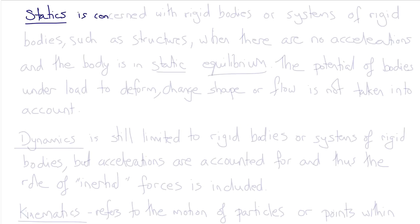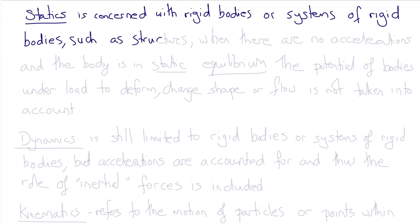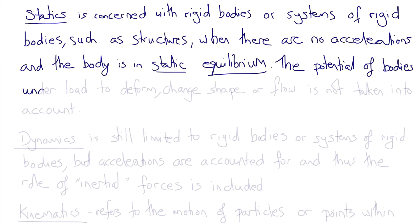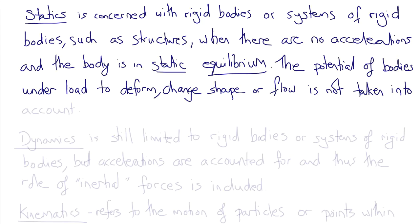Statics is concerned with rigid bodies or systems of rigid bodies, such as structures, where there are no accelerations and the body is therefore said to be in static equilibrium. The potential of these bodies to deform or change shape under load or to flow is not taken into account — that's what we mean by rigid. Therefore, the properties of the particular material are not considered, just how the forces get distributed between the components of the body based on the laws of mechanics, under the assumption that the body is in equilibrium.